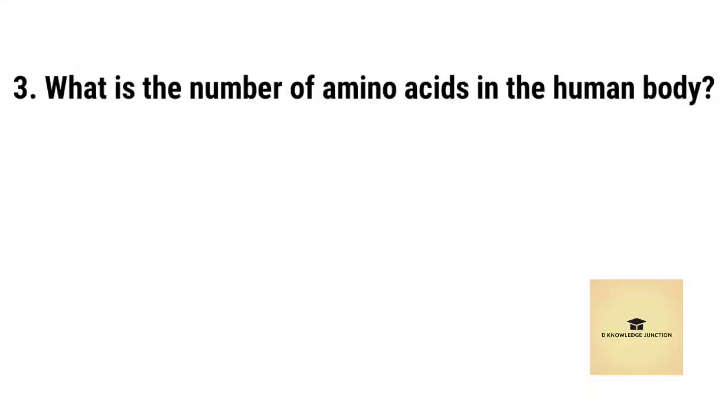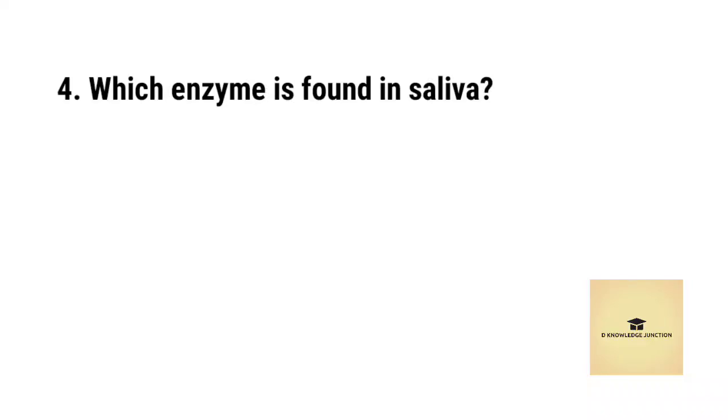What is the number of amino acids in the human body? Right answer is 20. Which enzyme is found in saliva? Right answer is Ptyalin.